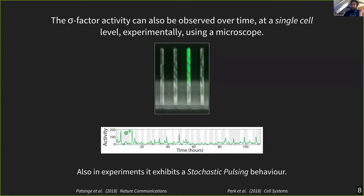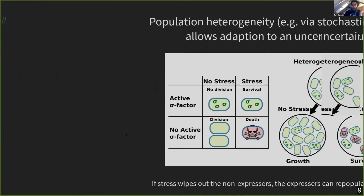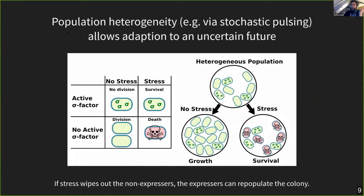The question is: why would bacteria want this highly random behavior? It turns out there are really two reasons to activate a sigma factor. Under certain stress conditions, it's probably better to survive if you have the sigma factor active. But a small stress might also act as a sign that a stronger, possibly lethal stress might come in the future. When there is a lethal stress, bacteria with the sigma factor active will be able to survive, while bacteria without active sigma factor will die. This is clearly a big advantage.